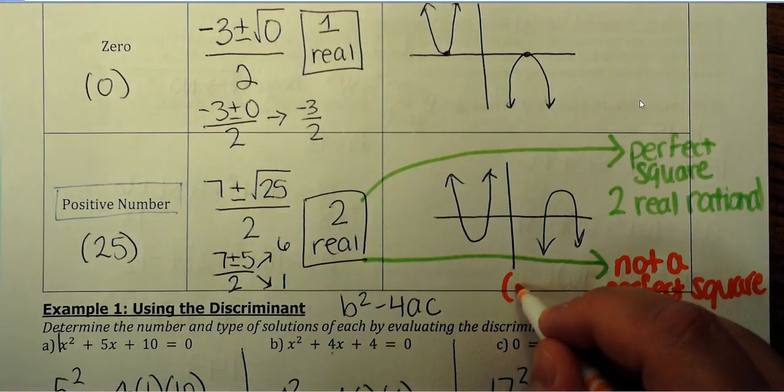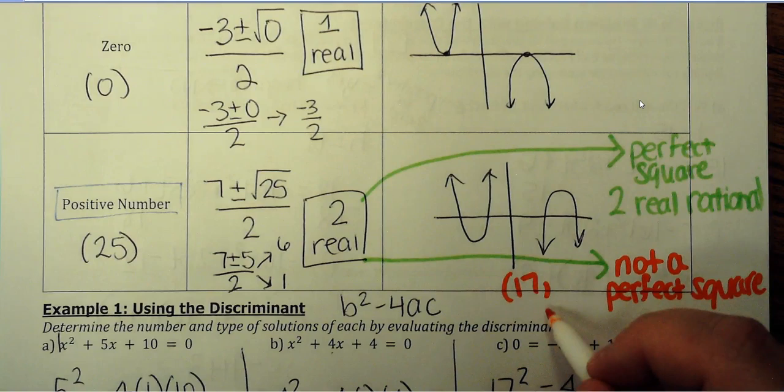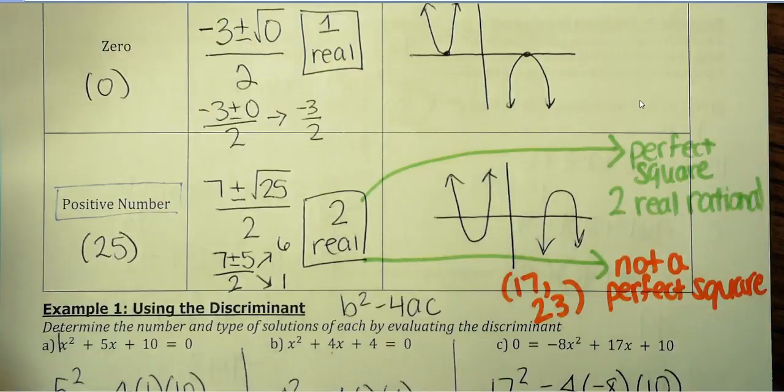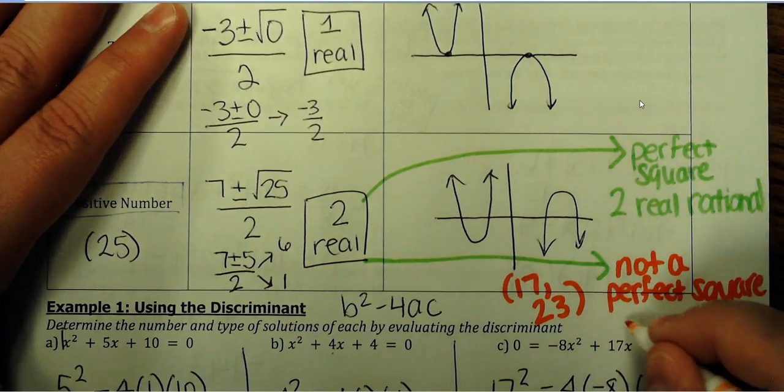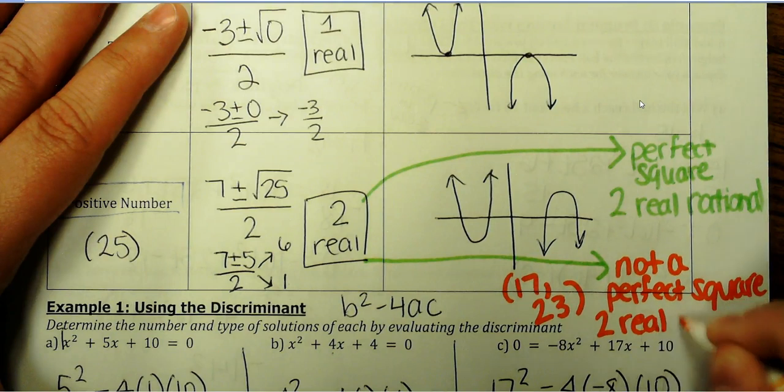then if you don't have a perfect square, let me give you an example. Let's say we had 17 or 23. Those are numbers that are not perfect squares. If that happens, your two real solutions will be irrational.